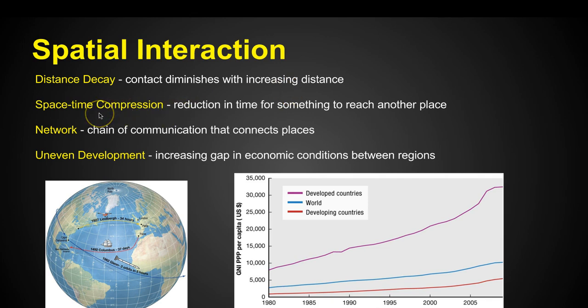But the thing we see happening now, because of technology, is space-time compression — the reduction in time for something to reach another place. Now we've got our phones, Skype, FaceTime, where I can just call Jordan in Egypt and talk to him — it's like he's almost right there. Or I can get on a plane and be there in hours instead of days or weeks. This network, this chain of communication, is what connects people and places.